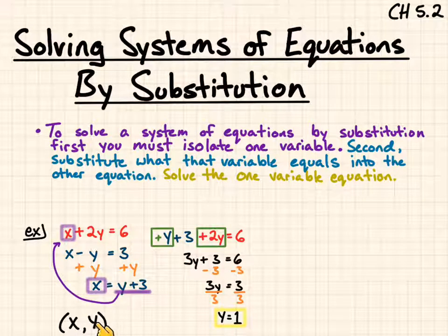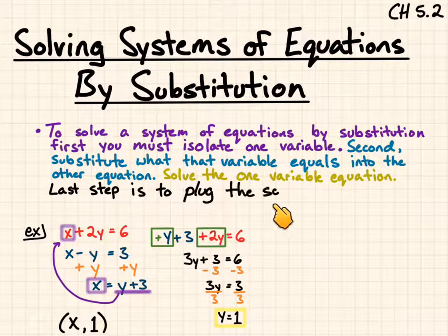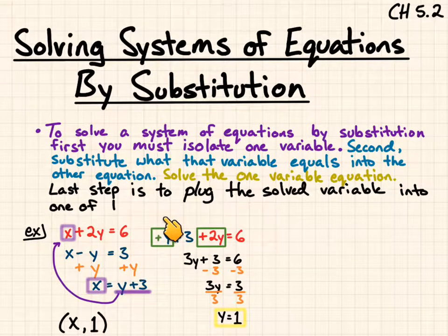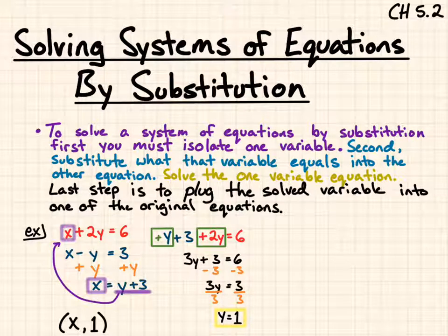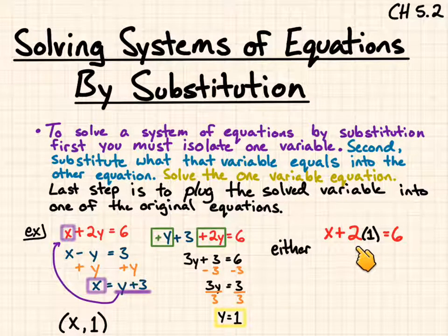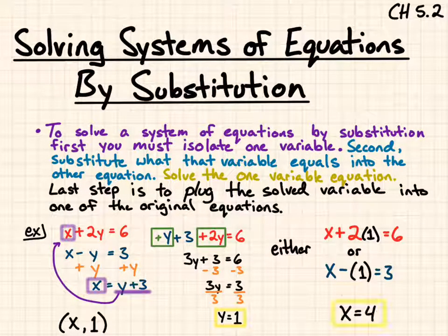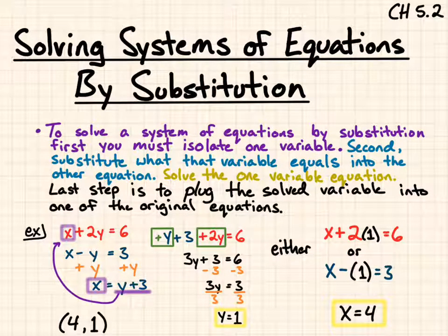My y equals 1. The last step is to plug the solved variable into one of the equations. So it's either x plus 2 times 1 equals 6, or x minus 1 equals 3. Either way, you get x equals 4. So your solution is the ordered pair (4, 1).